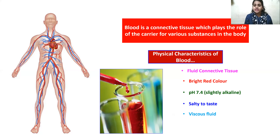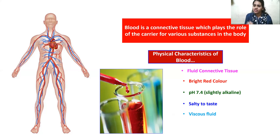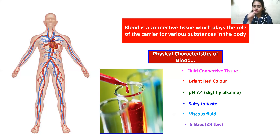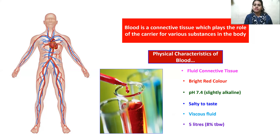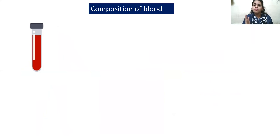The pH of our blood is 7.4. It is salty in taste and it is a viscous fluid. Viscous means it's a slightly sticky fluid — it's neither purely solid nor liquid, but a semi-liquid fluid that is a little bit sticky because of the cells present in it. The amount of blood present in your body is around 5 liters — more specifically, 8% of your total body weight constitutes the weight of your blood.